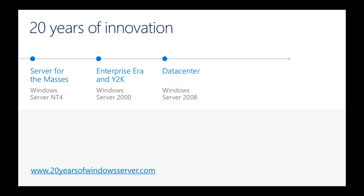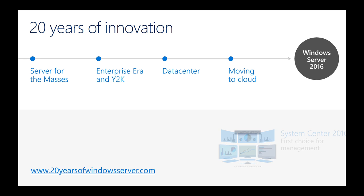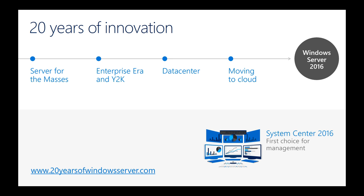That was 2008 in the data center area. Then Server 2012 is really when we began our move to the cloud. Here, we're taking advantage of capabilities we've been using in our public cloud — Azure — and actually bringing that technology on-premises so you can use it in your organization. Server 2012 really began that push with things like software-defined compute, software-defined storage, software-defined networking, and so much more. And now it really culminates with what we're doing in Server 2016.